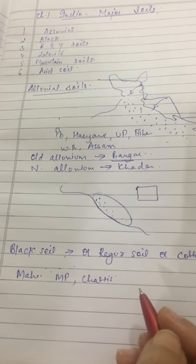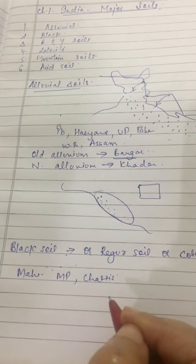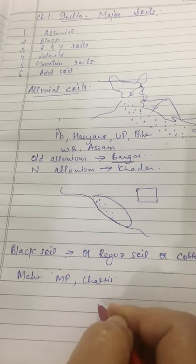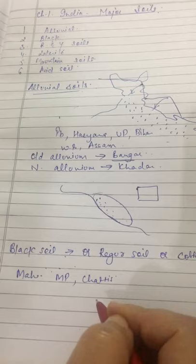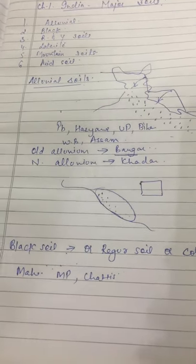This soil is made up of extremely fine clay material and known for their capacity to hold moisture. This soil is rich in calcium carbonate, magnesium, potash and lime and poor in phosphoric contents.